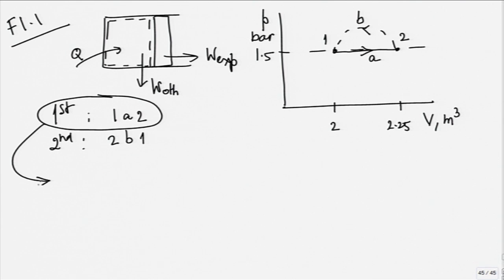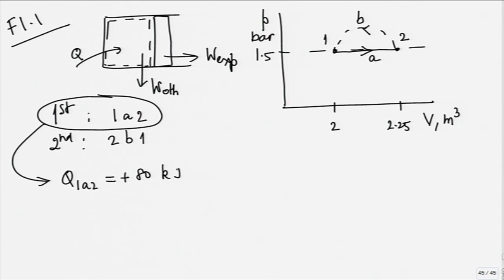We understood the concept sir, the formula we are unable to get, but we are getting the answer. There is no formula - you apply first law for the first process and for the second process. For example, in the first process: it absorbs 80 kilojoules of heat. So the specification is Q_1A2 equals plus 80 kilojoules.